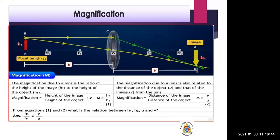Lens formula: 1/V − 1/U = 1/F — showing the relationship between object distance, image distance, and focal length. It is the same for any spherical lens. Sign conventions must be used properly. If V is negative, the image is on the same side as the object; if V is positive, the image is on the other side of the lens.